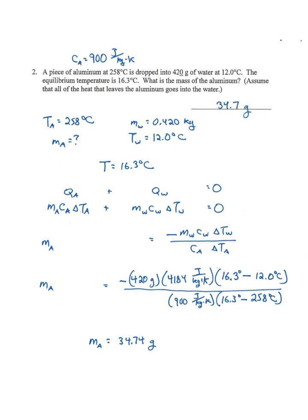Mass of aluminum is negative mass of water times c of water times delta T of water, divided by c of aluminum times delta T of aluminum. We plug in all those values. I left the water as 420 grams. Even though I wrote it as 0.420 kilograms, I left it as grams. All the other units are going to divide out—joules per kilogram Kelvin, Celsius degrees—and we'll be left with grams. We get a mass of aluminum of 34.74 grams.